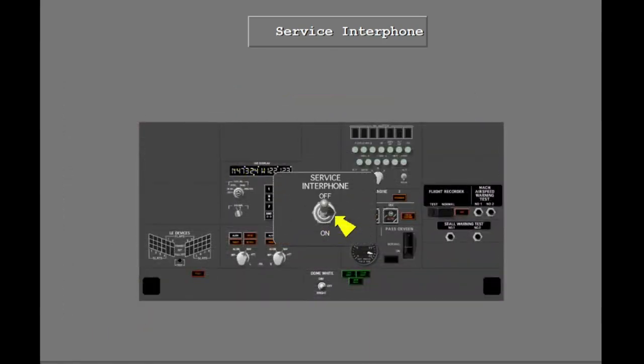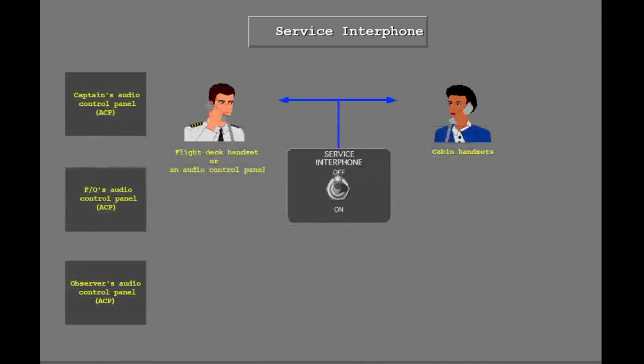The service interphone switch is on the aft overhead panel. It connects all external service interphone jacks to the service interphone system. Normally the switch remains in the off position. It is not necessary to set the switch to on to communicate between the flight deck and cabin. Now position the service interphone switch to on.